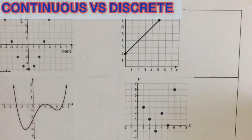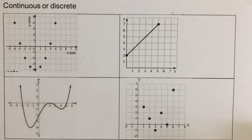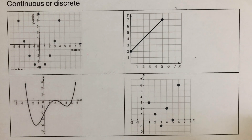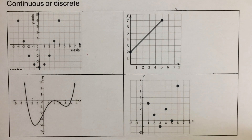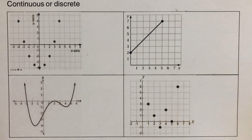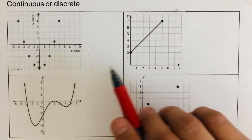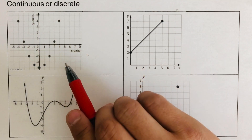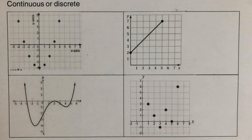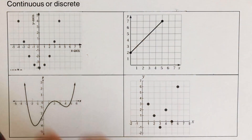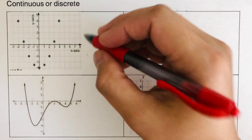Did you get the same answers? Good. Now we are going to look at examples expressed in graph form — how do we know if a graph is continuous or discrete? Here's a hint: continuous comes from the word 'continue,' meaning the dots are connected to each other. If it's discrete, the dots are not connected to each other.